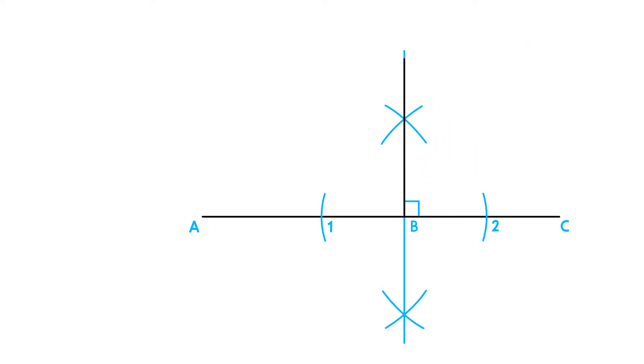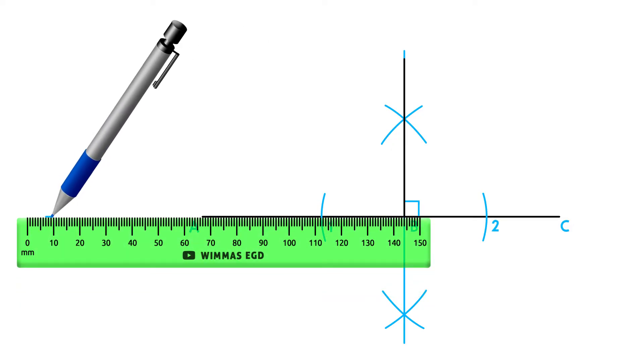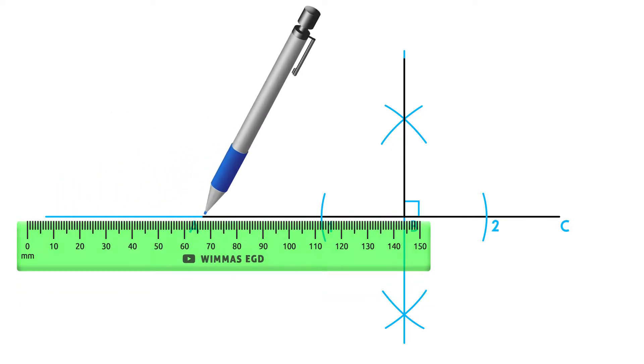If you want to draw a perpendicular line on point A, you will first need to extend line AC and follow the same steps as on point B.